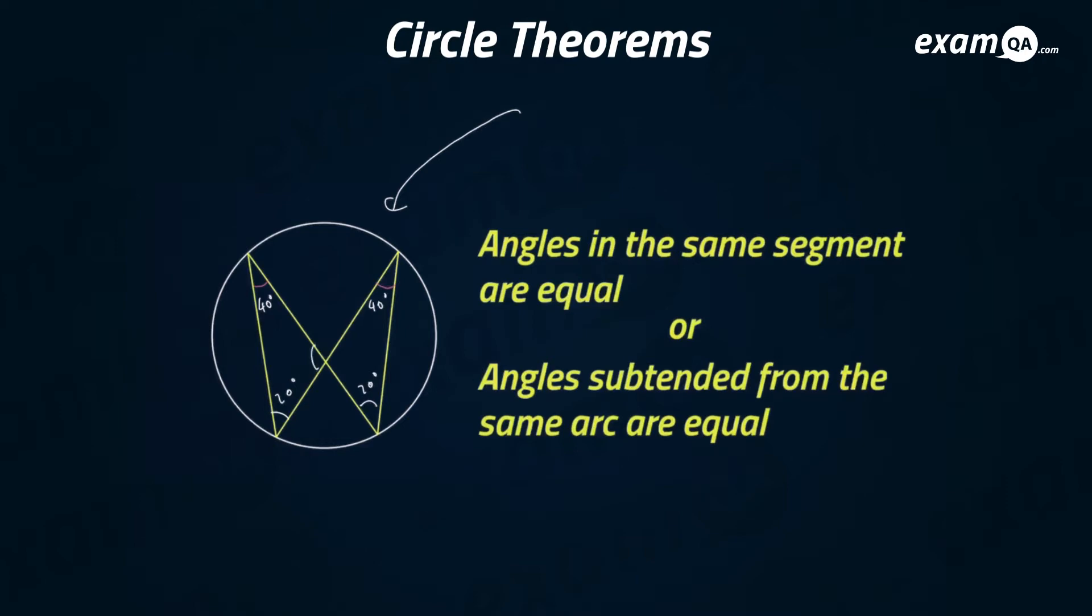And of course if this was 60, this would be 60 as well, but that's not necessarily because of the circle theorem. That's just because opposite angles are the same. The key phrase is angles in the same segment are equal, but of course this is the actual definition. The first definition is a bit easier to memorize.